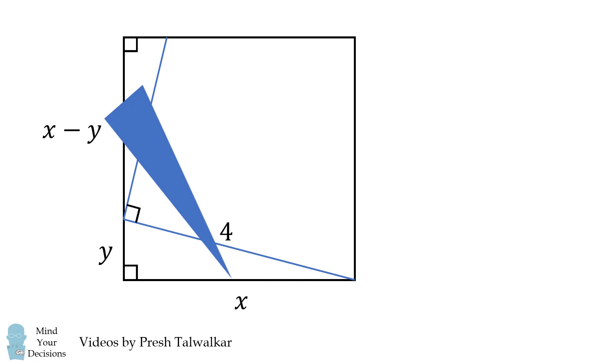Now, we use the property that these two triangles are similar. Therefore, the ratio of their long leg to their hypotenuse will be equal. So, X minus Y all over 3 must be equal to X over 4.